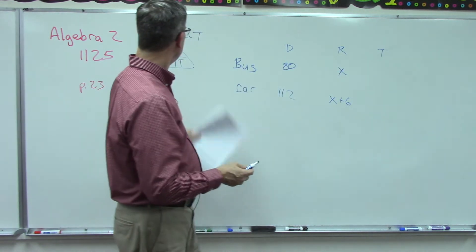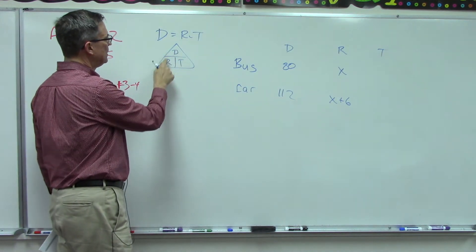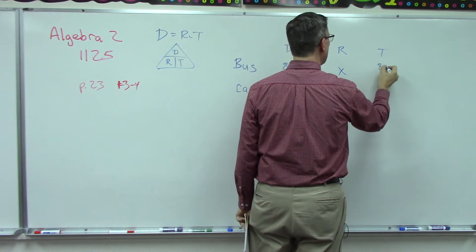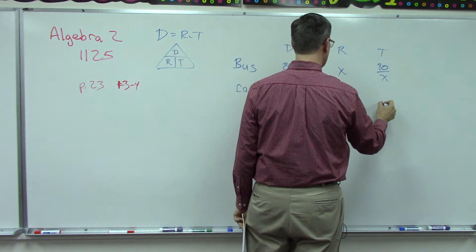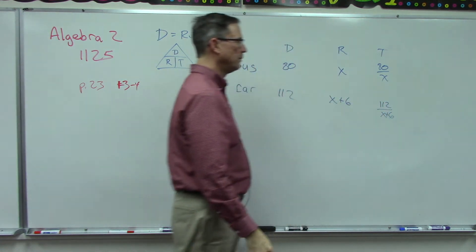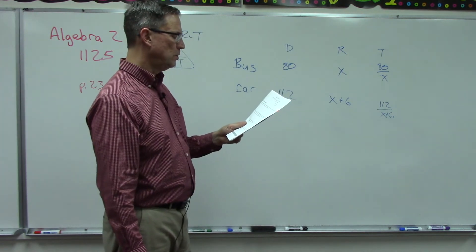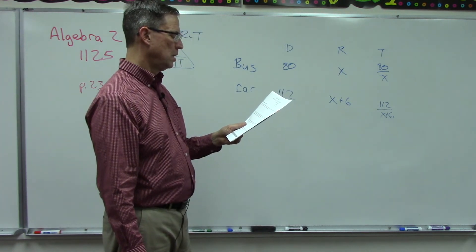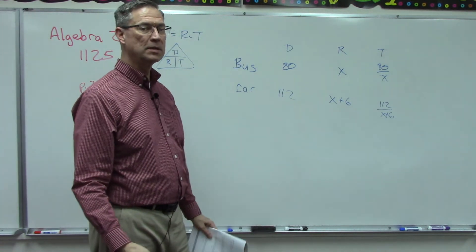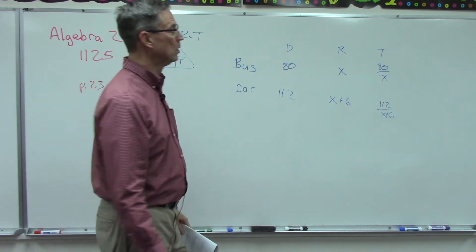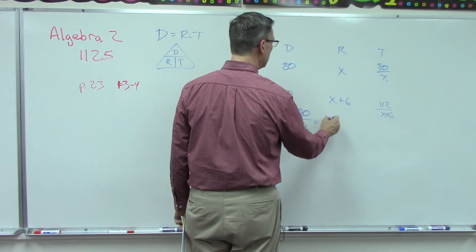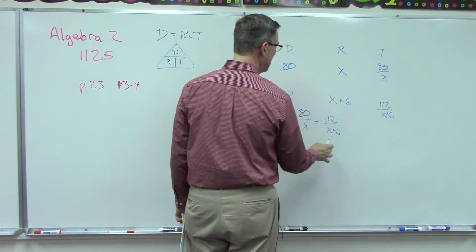How do we express time? Time is distance divided by rate, so we can write this as a fraction: 80 over x, and then this one is going to be 112 over x plus six. What do these two times equal? Oh, in the same time. Whenever you see that term 'in the same time,' same time means they are equal.